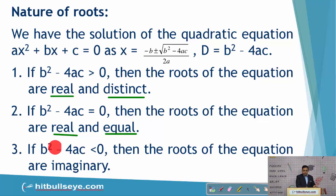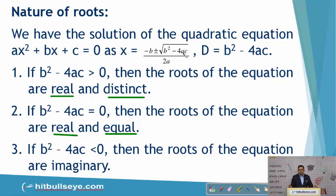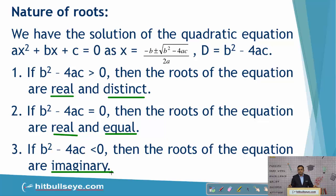Third case: when the discriminant is negative. We know that the square root of negative numbers is always an imaginary number. So whenever the discriminant is negative, the roots of the equation will be imaginary. These are the three types of roots based on the discriminant of the quadratic equation.